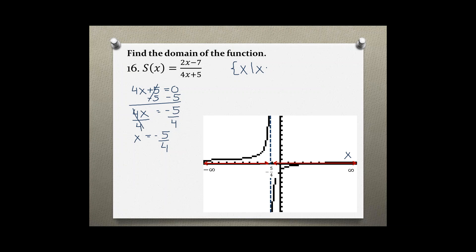Writing this in set builder notation, you have all the values of x such that x cannot be equal to -5/4.